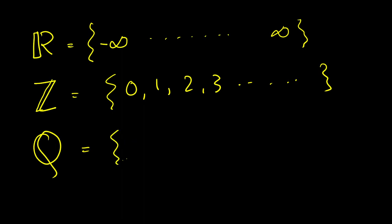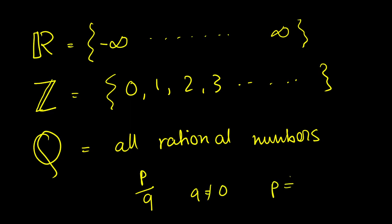Okay, let us recall what... p by q where q is not equal to 0 and p is not equal to q. All right, there is also another set called T where it's all irrational numbers, okay.